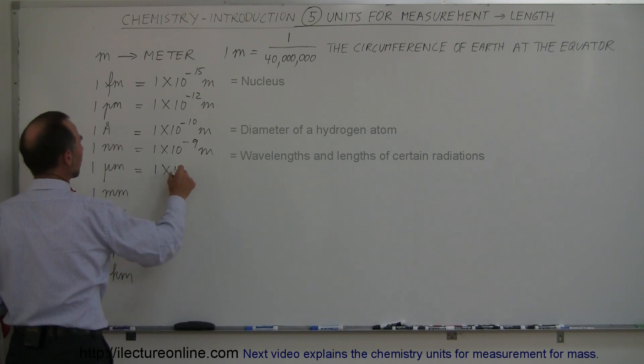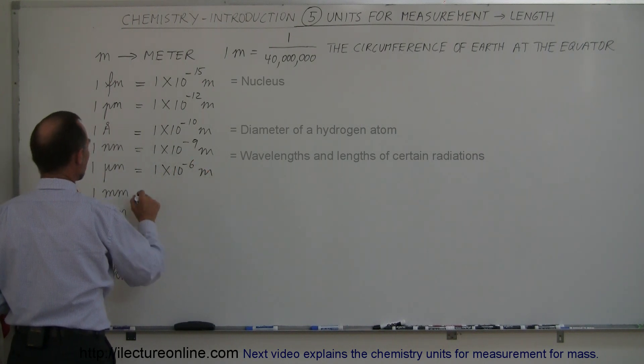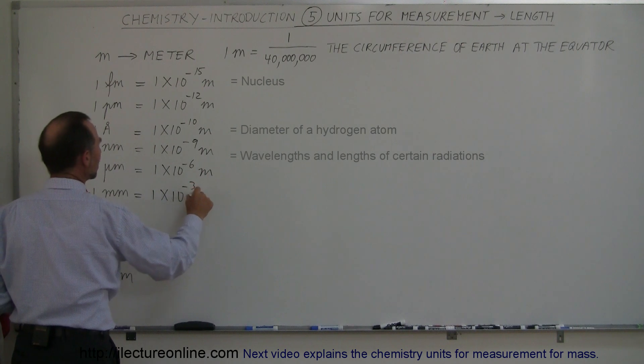Micrometers is 1 times 10 to the minus 6 meters, and millimeters is 1 times 10 to the minus 3 meters.